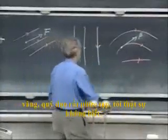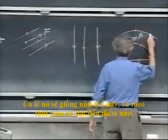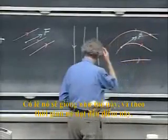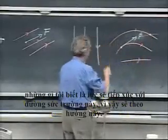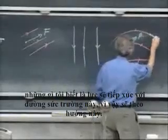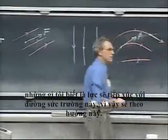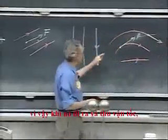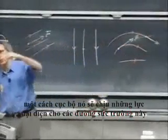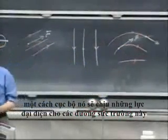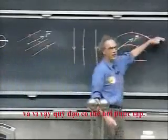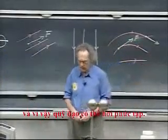I really don't know. Maybe it's going like this. And by the time it reaches this point, the force will be tangential to this field line, so it will be in this direction. And so as it marches out and picks up speed, locally it will experience forces representative of those field lines, and so the trajectory can be rather complicated.